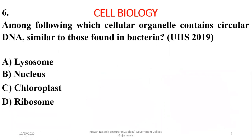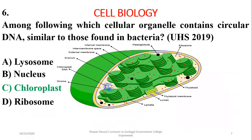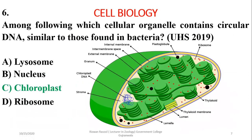Question 6: Among the following, which organelle contains circular DNA similar to that found in bacteria? Chloroplasts and mitochondria have their own DNA similar to bacterial DNA. The right option is Charlie — you can see the circular coiled DNA of the chloroplast highlighted in blue.